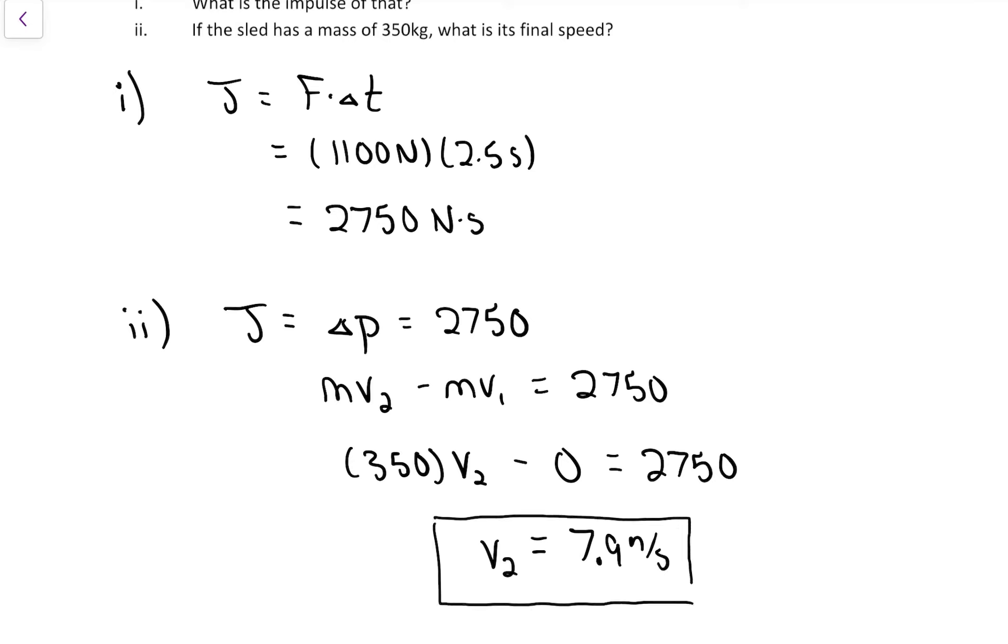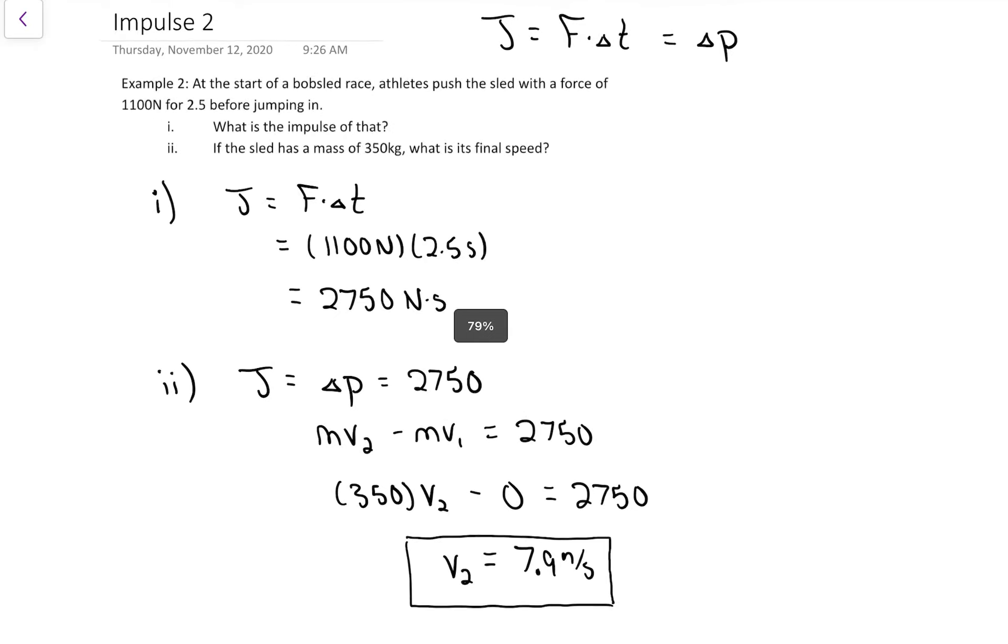By the magic of the metric system, impulses in newtons times seconds is equivalent to momentum units of kilograms times meters per second, so we end up with a speed in meters per second.